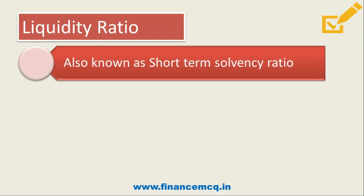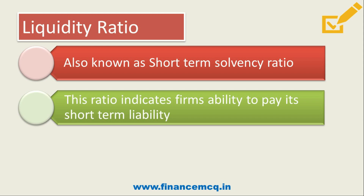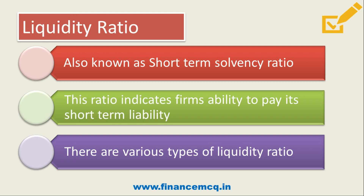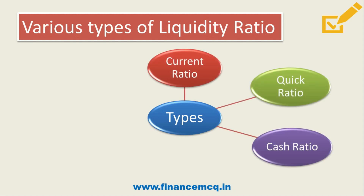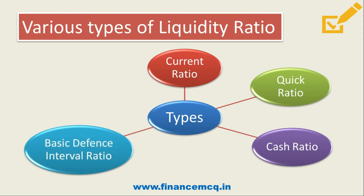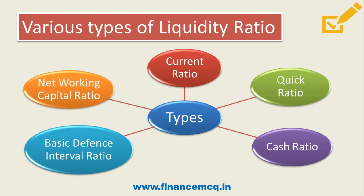Let's discuss liquidity ratios. This ratio is also known as short-term solvency ratio and it indicates the firm's ability to pay its short-term liabilities — that is, whether you can pay your short-term debt or not. The types of liquidity ratios are: current ratio, quick ratio, cash ratio, basic defense interval ratio, and net working capital ratio.